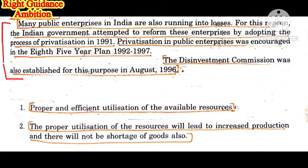Many public enterprises in India are running into losses. For this reason, the Indian government attempted to reform these enterprises by adopting the process of privatization in 1991. In 1991, many companies' shares went down and India took a short-term loan from the IMF. The condition of that loan was that India had to privatize its shares. This is how privatization was encouraged in India in 1991.